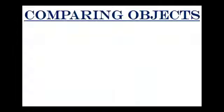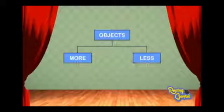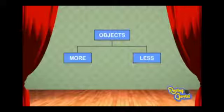Now let's learn to compare objects based on their quantities or numbers. When we have two objects of different quantities, one is more in quantity and the other one is less in quantity.